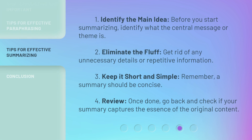Tips for effective summarizing: 1. Identify the main idea — before you start summarizing, identify what the central message or theme is. 2. Eliminate the fluff — get rid of any unnecessary details or repetitive information. 3. Keep it short and simple — remember, a summary should be concise. 4. Review — once done, go back and check if your summary captures the essence of the original content.